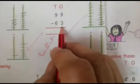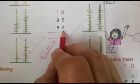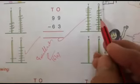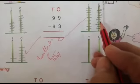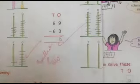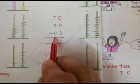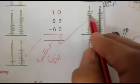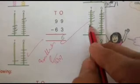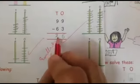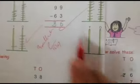And how many 1s we have to cut? 3. 1, 2, 3. How many are left? Count it. 1, 2, 3, 4, 5, 6. And how many beads we have to cut from 10s place? 6. 1, 2, 3, 4, 5, 6. How many are left? 1, 2, 3. Now what is the answer? 99 minus 63 is equal to 36.